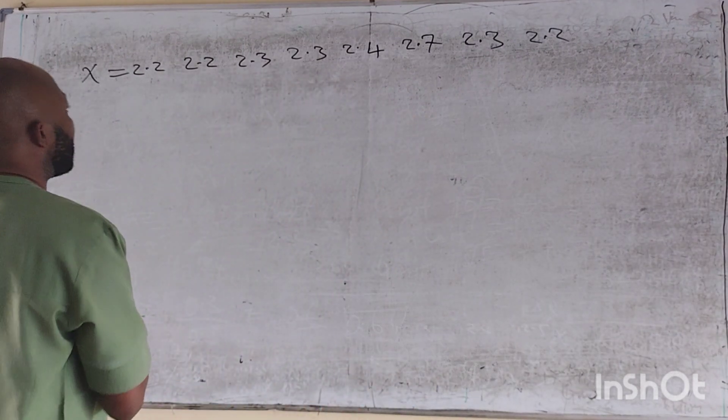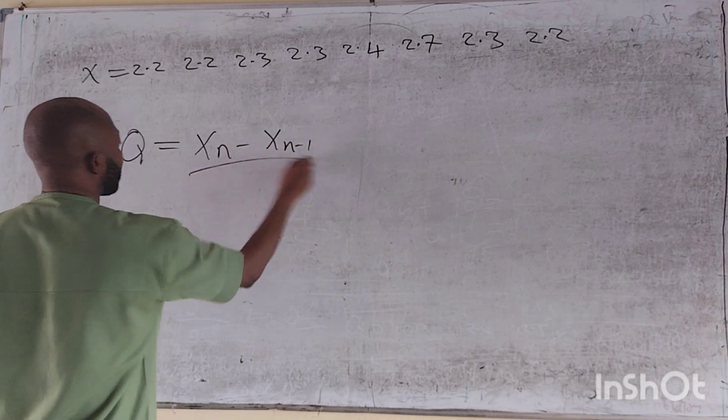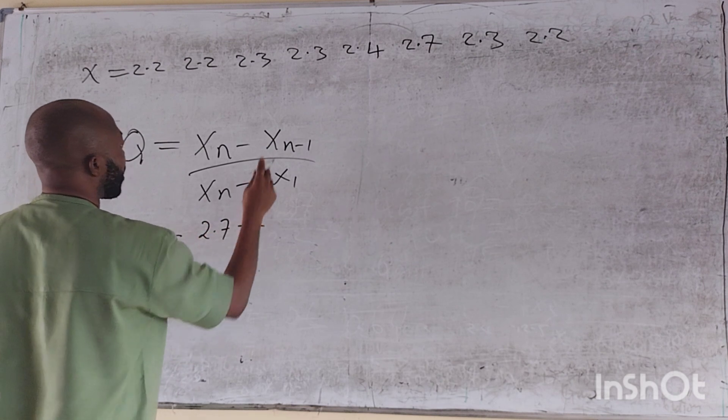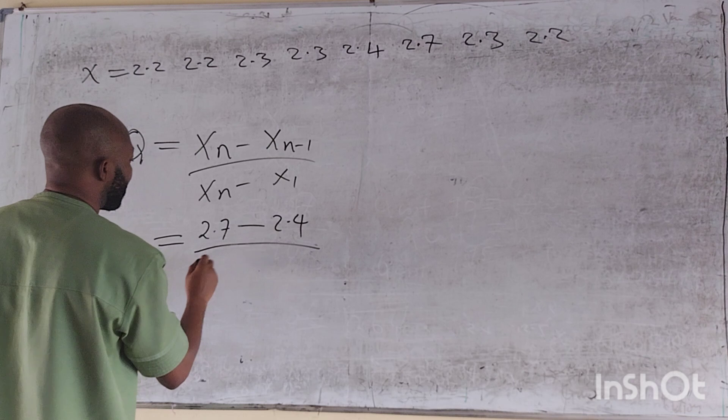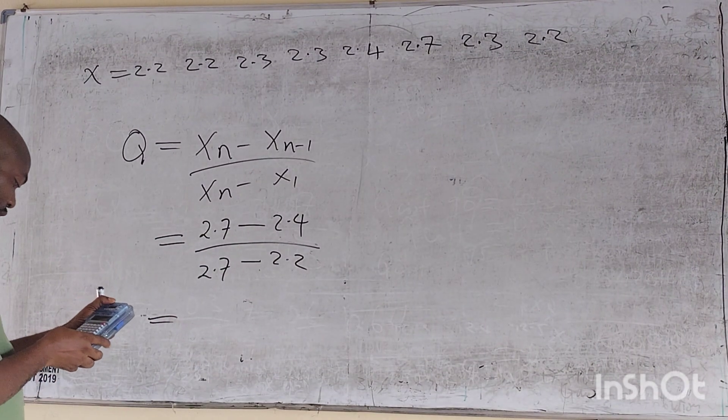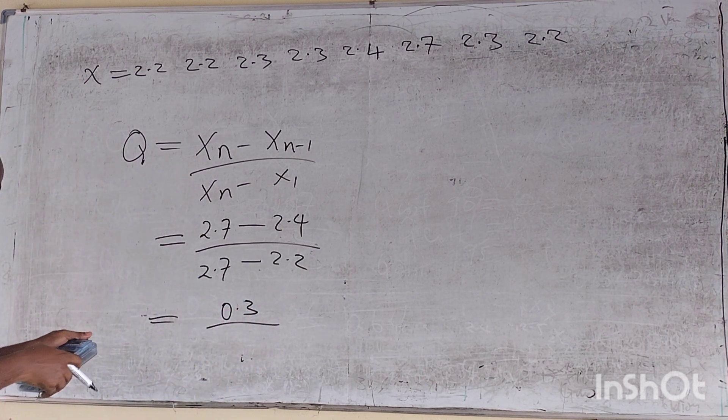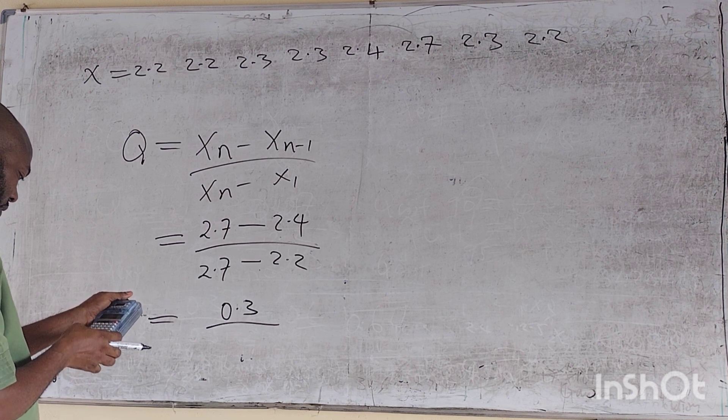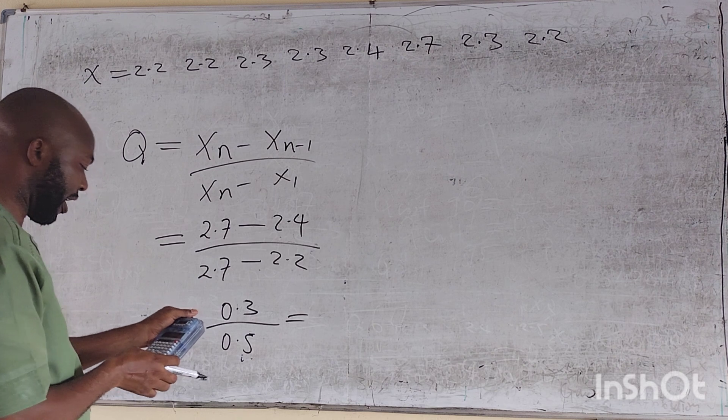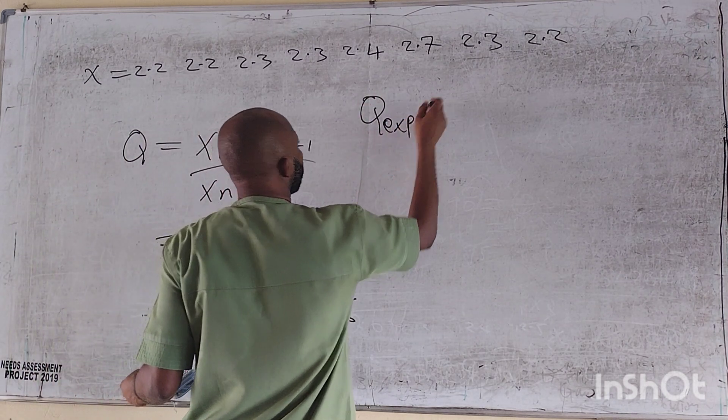Question three, at 95% confidence, interpreter. So let's go there. We have my Q-experimental to be xn minus xn minus 1 over xn minus x1. And this is equal to the outlier, the outlier is 2.7 minus the one next to it is 2.4 over 2.7 minus the first one is 2.2, which is equal to. Now 2.7 minus 2.4 is 0.3 over 2.7 minus 2.4 is 0.3.